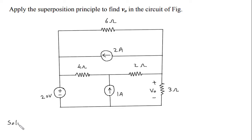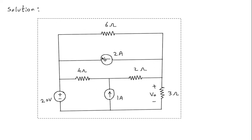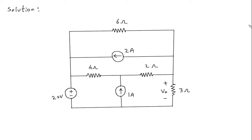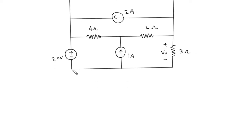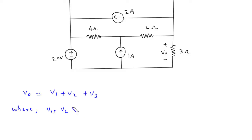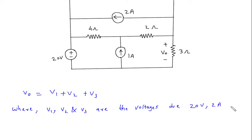For the solution, we will first redraw the circuit. Vo is equal to V1 plus V2 plus V3, where V1, V2, and V3 are the voltages due to the 20V voltage source, the 2A current source, and the 1A current source respectively.